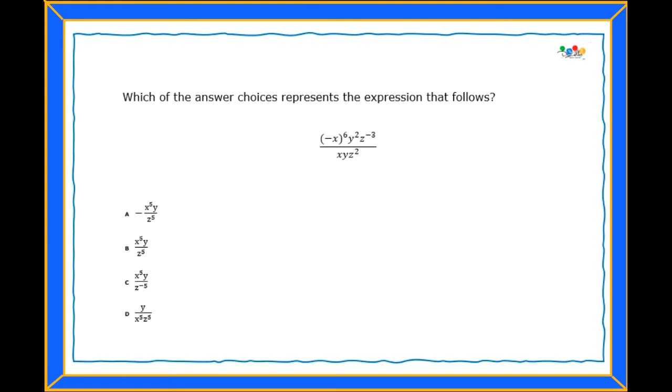Hello students, let's do the next problem. It says which of the answer choices represents the expression that follows: negative x to the sixth power y squared z to the negative third power over x, y, z to the second power.